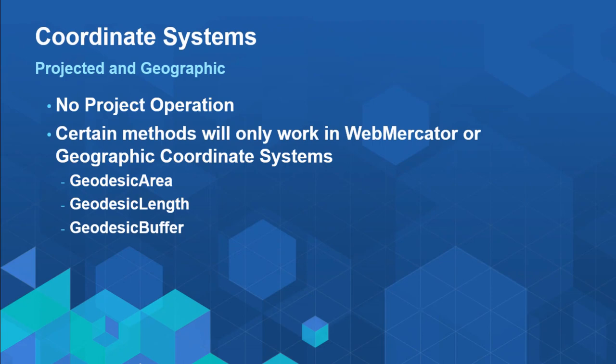There is no project method in the geometry engine — that's one method not implemented. That means when you use geodesic area, length, and buffer, it will only work if your coordinates are in a geographic coordinate system. There is one exception: a specific transformation for Web Mercator has been coded, so you can use Web Mercator coordinates and have those methods work. For other projections, those particular geodesic functions will not work. However, projected coordinate systems are usually optimized to minimize distortion in their area, so the planar length, area, and buffer methods should be quite accurate in the projection you're working in.